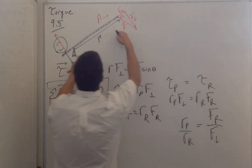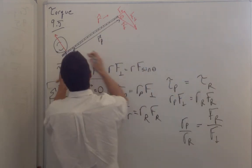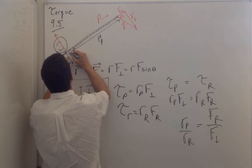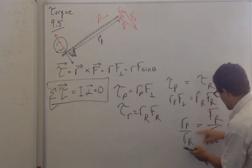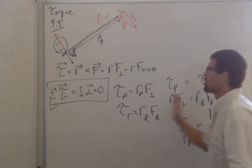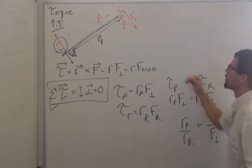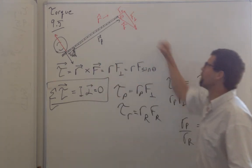And because this moment arm, this radius of peat, is much greater than this little radius of the rock. Because this is much greater than this. The force applied onto the rock is much greater than the perpendicular component of the force I put here.